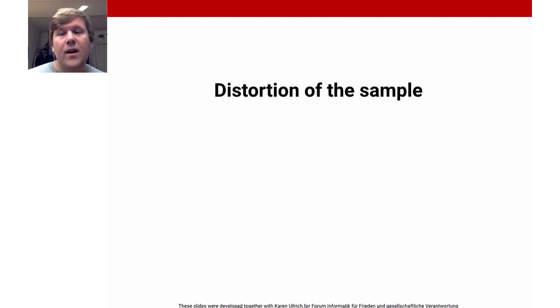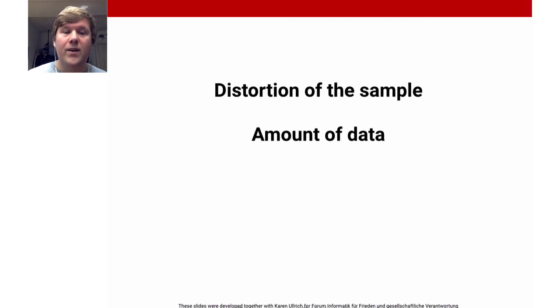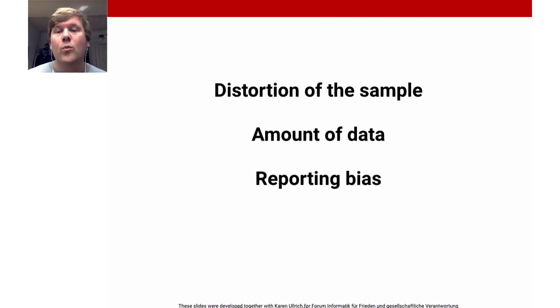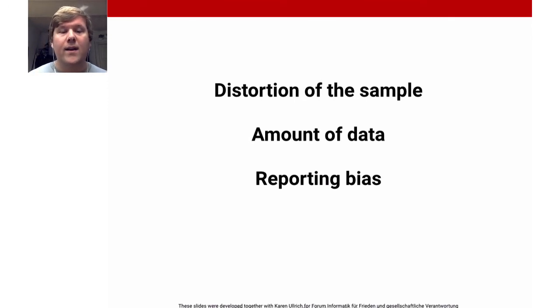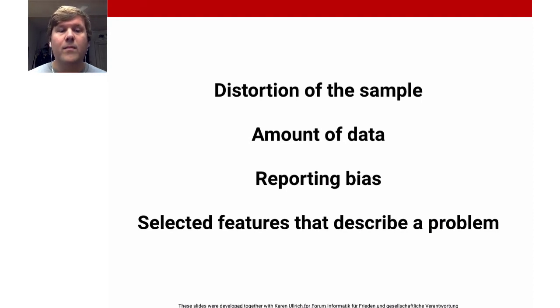This is a particularly strong example of so-called sampling bias, in which a certain group is represented differently. Such biases can occur randomly — for instance, if too few data points are available to make reliable statements, as we often see in medical studies where testing is expensive and time consuming. Then there is reporting bias, which describes when respondents make incorrect statements — for instance, when questioned about a violent crime where fear or repression plays a role. And then there are the selected features that describe a problem, which can also influence the modeling quite significantly.